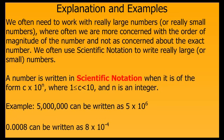For example, instead of writing 5 million as a 5 and then 6 zeros, we can write it as 5 times 10 to the 6th. The same idea with 8 ten-thousandths — we can write it as 8 times 10 to the negative 4.